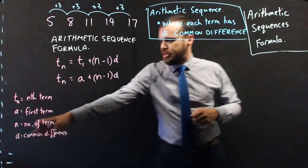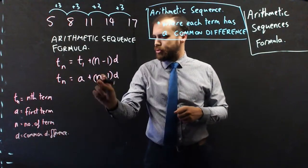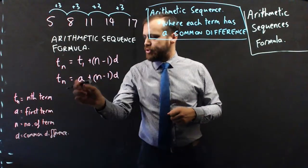All right, there's our little thing here. d is for common difference, n is for the number of the term, a is for the first term.